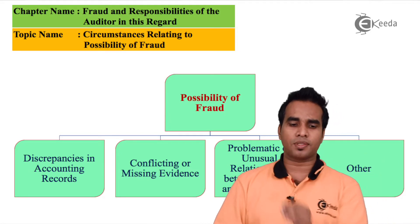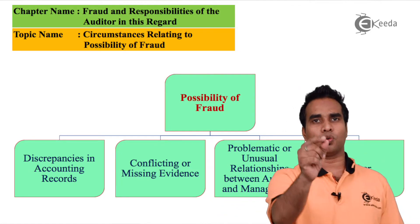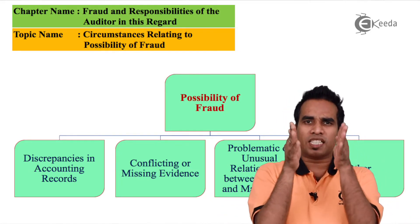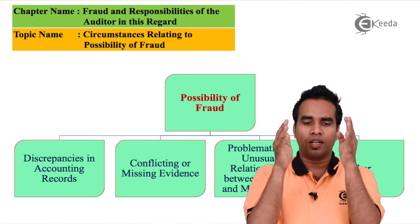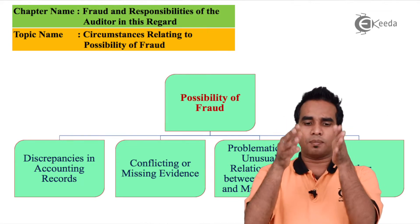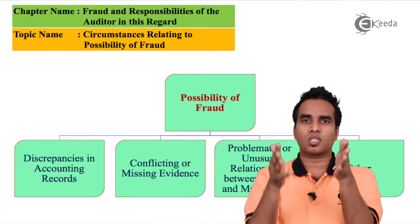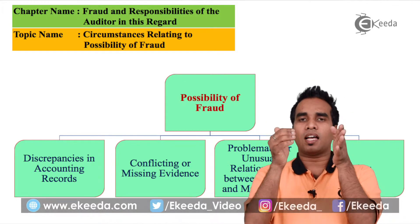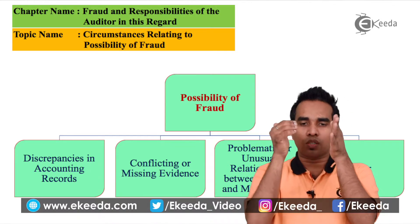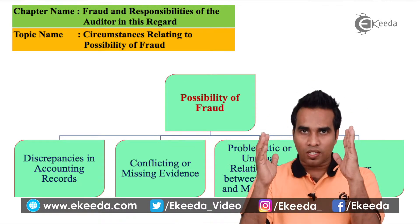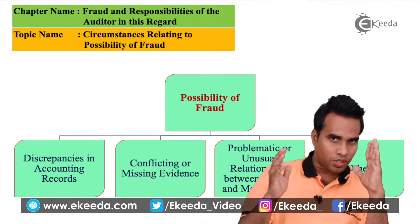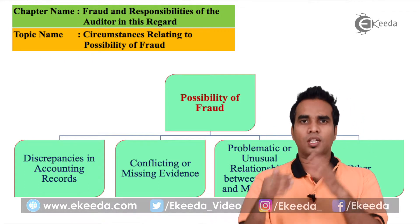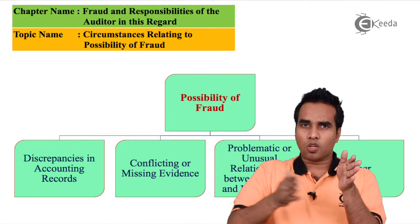There are 4 circumstances. First, discrepancies in accounting records. Second, missing evidence. Third, unusual relation between auditor and client. And the 4th is other circumstances. We will explain these 4 parts.